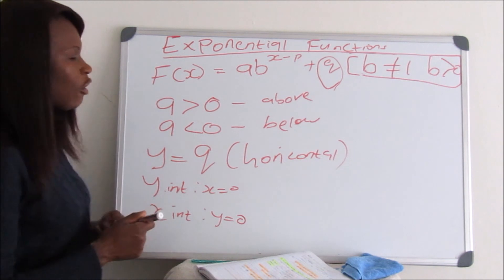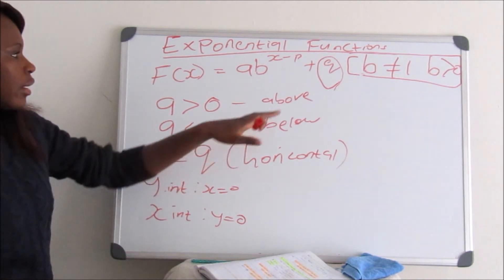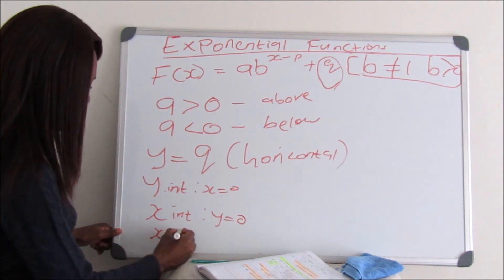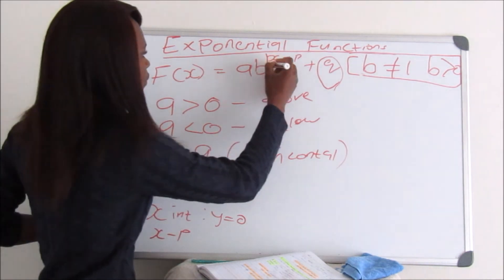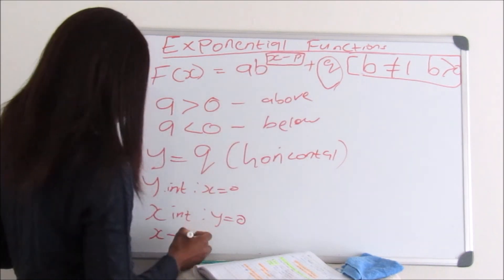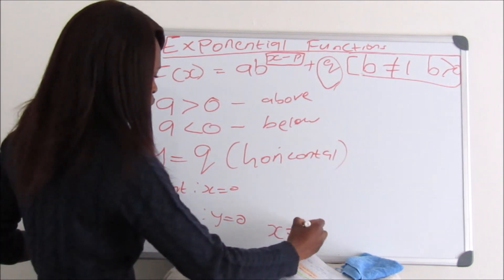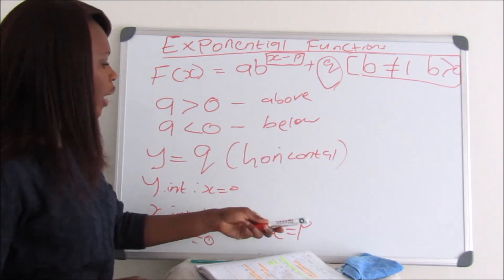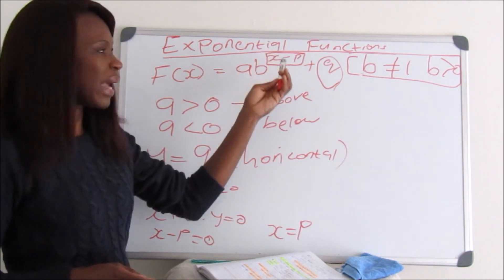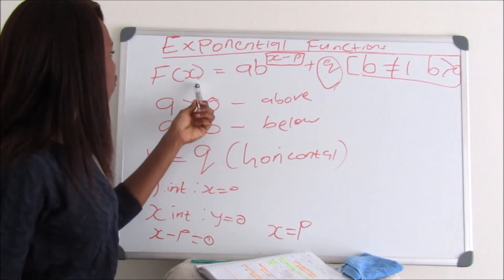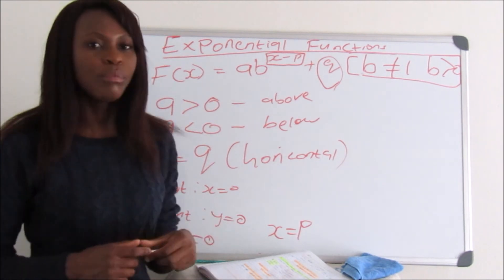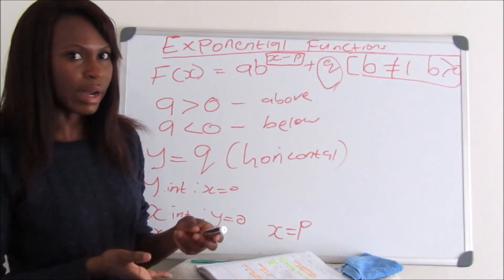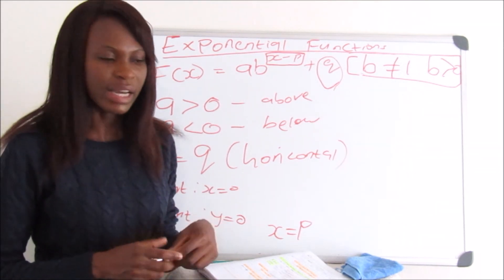The quickest and easiest way to find another point is to make X minus P equal to 0, so X equals P. Take that value of X and substitute it back into the equation to find the Y value, giving you another point on the graph so you can draw it with a nice shape.